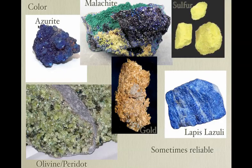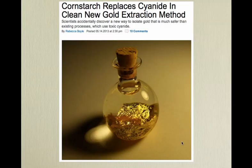Malachite — from malo in Greek, meaning green. Sulfur is always yellow. Olivine is an olive green color, also known as peridot. Gold is gold. Lapis lazuli is not really a mineral but is always that kind of blue. Here is gold — I have a little bottle of this; you can buy it for $6 or $8 at various sites.